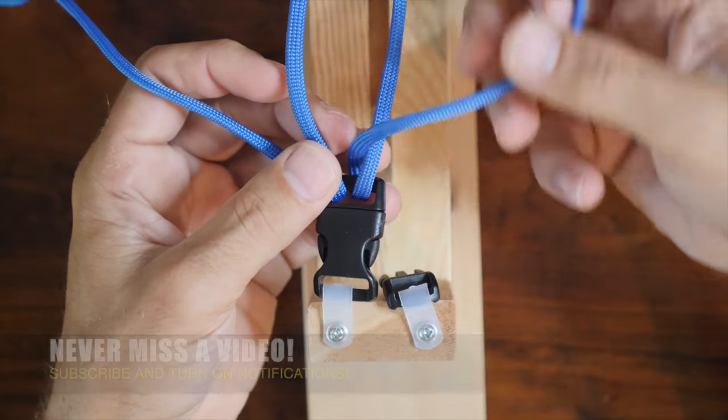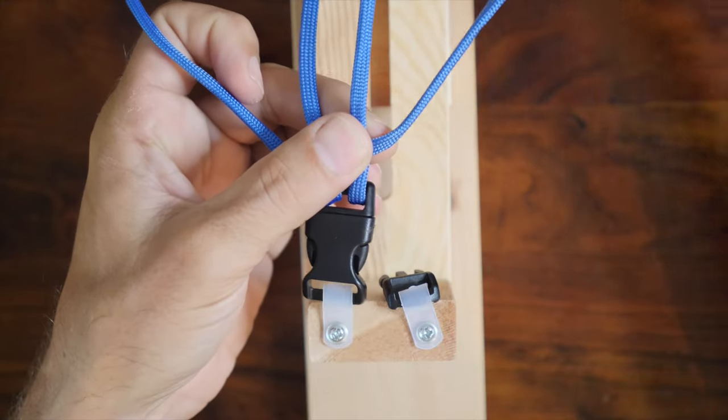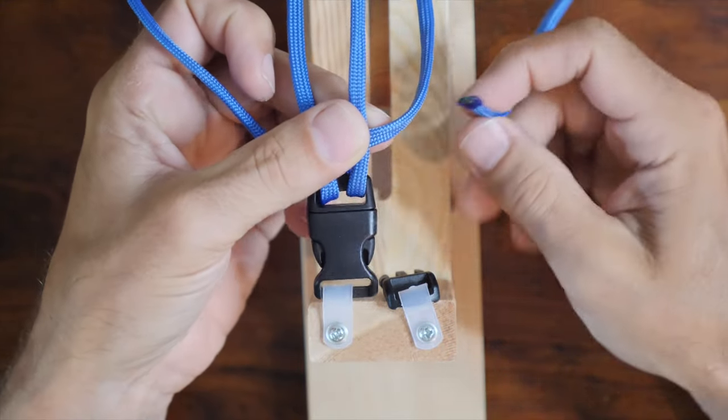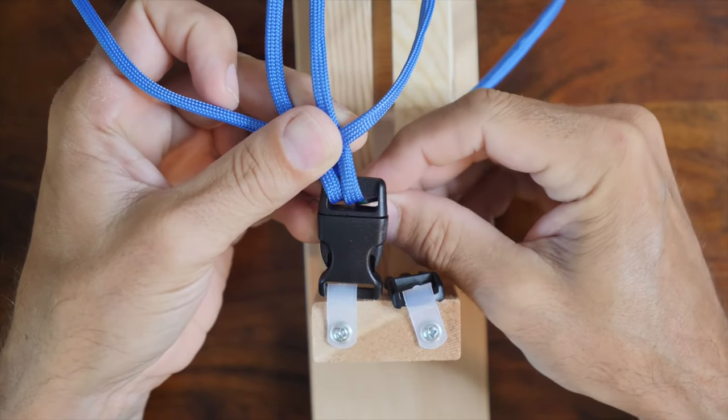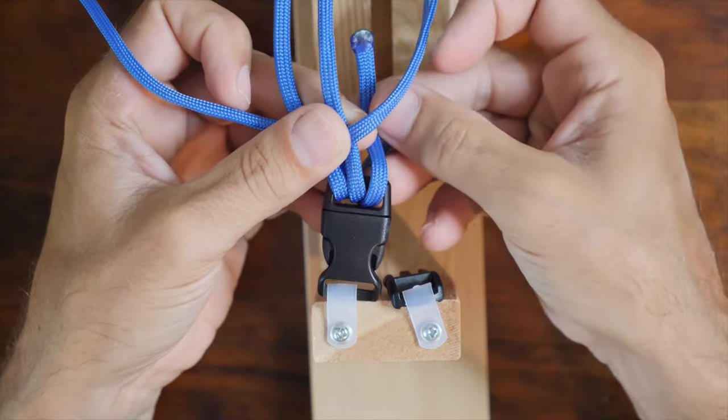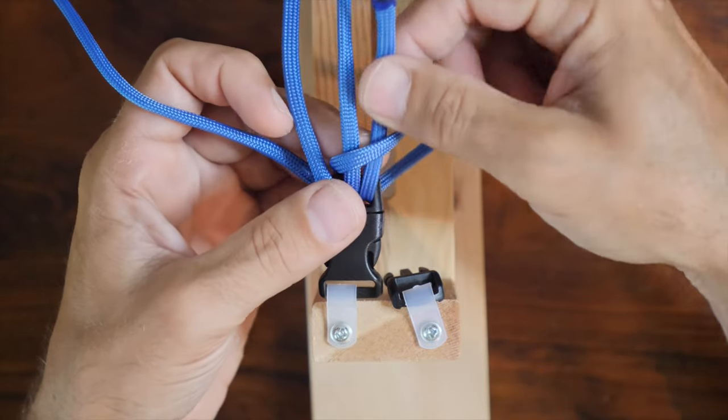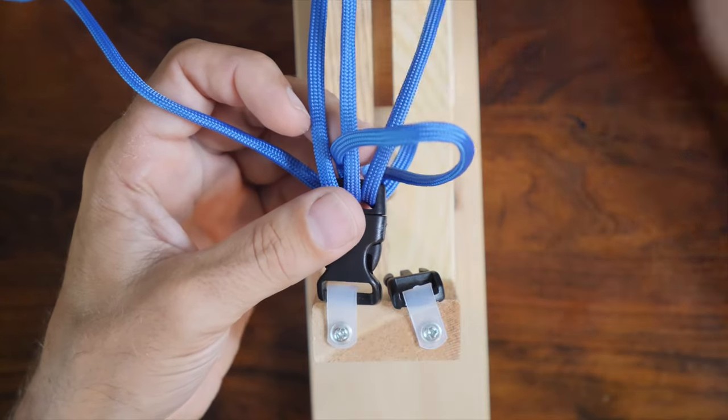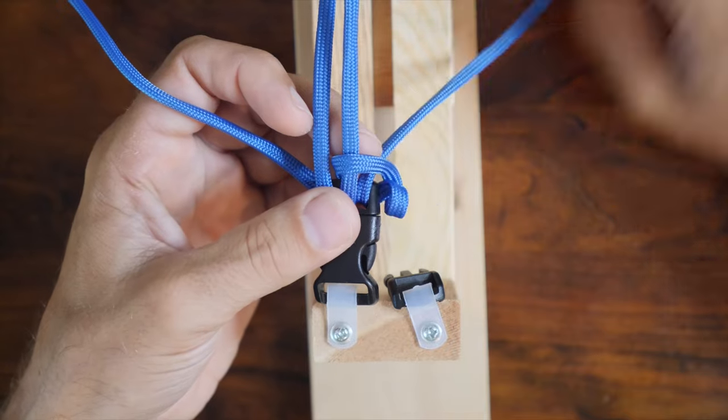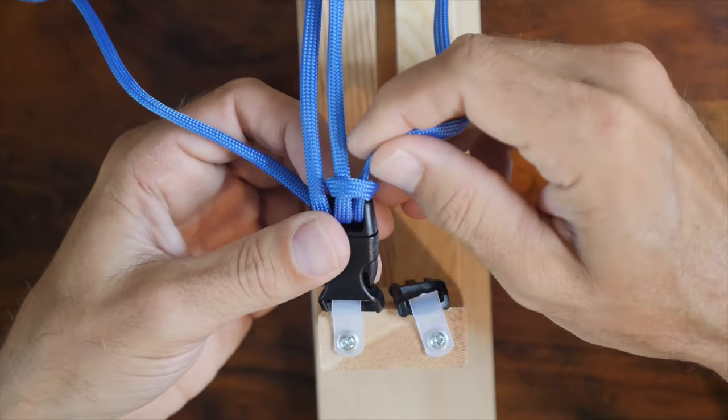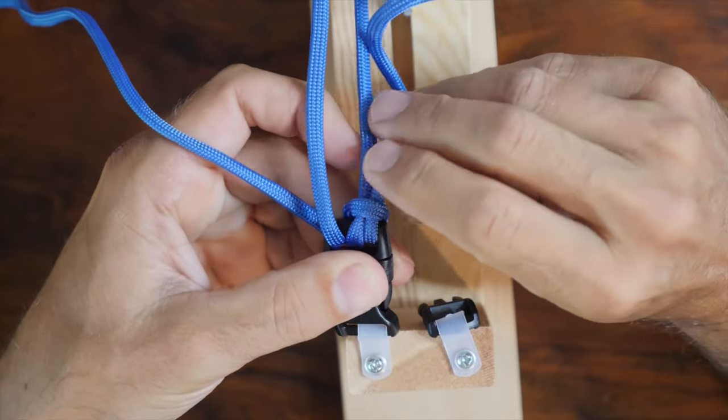Let's start on the right side. Bring your working end to the center of your two cords, then cross it over your right cord. And then pass the working end up through the bottom of your clasp as shown, keeping it under your working line. Adjust the line and cinch up your knot. So that's one done.